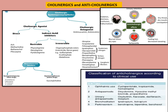In cholinergic drugs we have cholinergic agonists and antagonists, just like adrenergic drugs — directly acting through the receptor and indirectly acting. Indirectly acting include the reversible ones like physostigmine and neostigmine, while the irreversible ones are organophosphate gases. Antagonists that block the cholinergic effect include atropine, scopolamine, glycopyrrolate, mecamylamine, and trimethaphan.